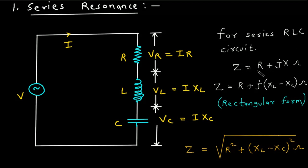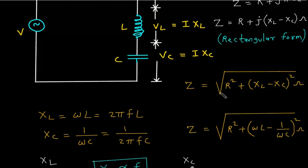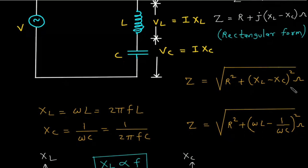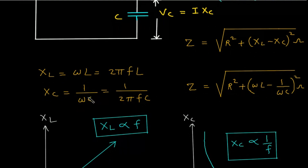For a series RLC circuit, Z = R + jX, where X is the reactance and equals XL minus Xc. This is the rectangular form. The magnitude of impedance is Z = √(R² + (XL − Xc)²). Where XL = ωL = 2πFL, and Xc = 1/(ωC), with ω = 2πF. So Z = √(R² + (ωL − 1/(ωC))²).